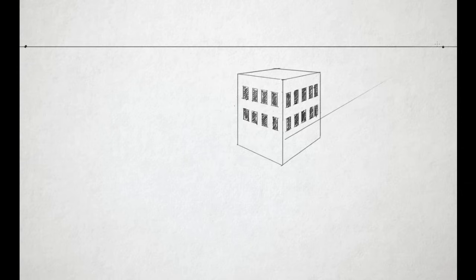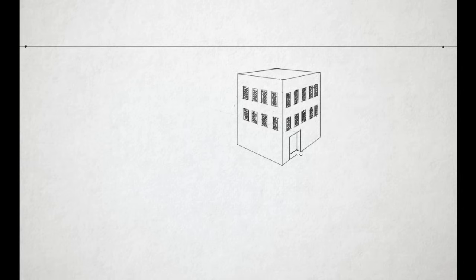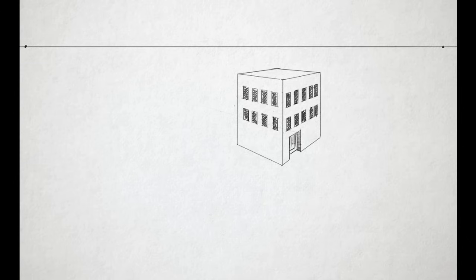Let's add an entrance to the building. We'll start with a line back to the vanishing point to indicate the height of the doorway, then draw straight up and down vertical lines to indicate the shape of the door. Right inside the corner we'll draw a line back to the vanishing point on the opposite side, then a straight vertical line, and finish with a line back to the vanishing point on the right to complete the form. We'll add just a bit of shading on the inside to make it feel more three-dimensional and perhaps a little detail on the door.